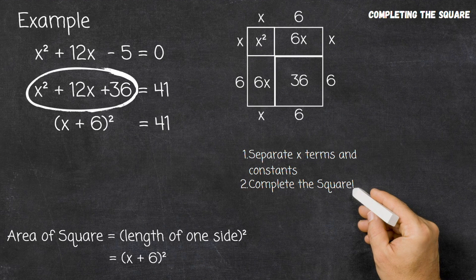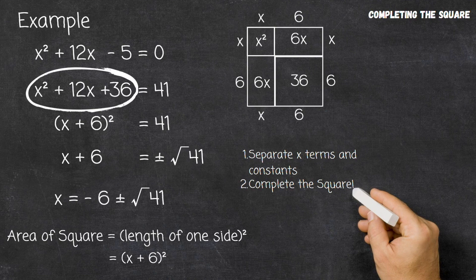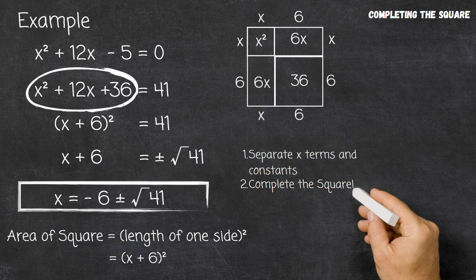Now we've written it in a way that allows us to solve the equation quite easily using inverse operations. We square root the left-hand side and we square root the right-hand side, giving us x plus 6 equals plus or minus the square root of 41 — not forgetting the plus or minus, which is very important, since both the negative and the positive will square to give the positive answer. Finally, we subtract 6 from both sides, giving us x equals minus 6 plus or minus the square root of 41.